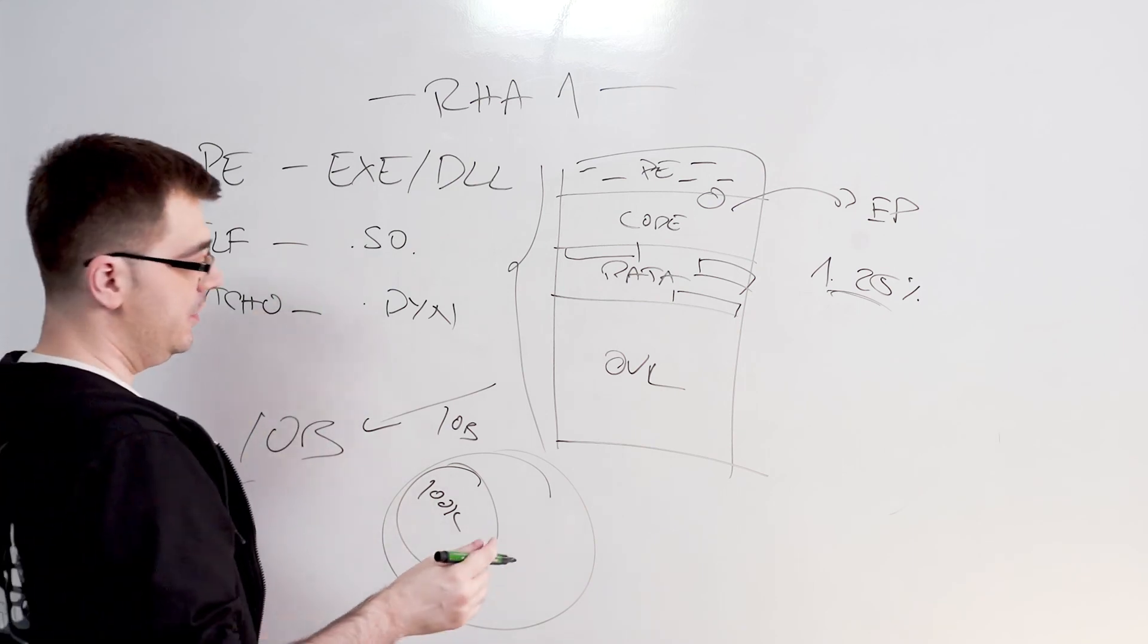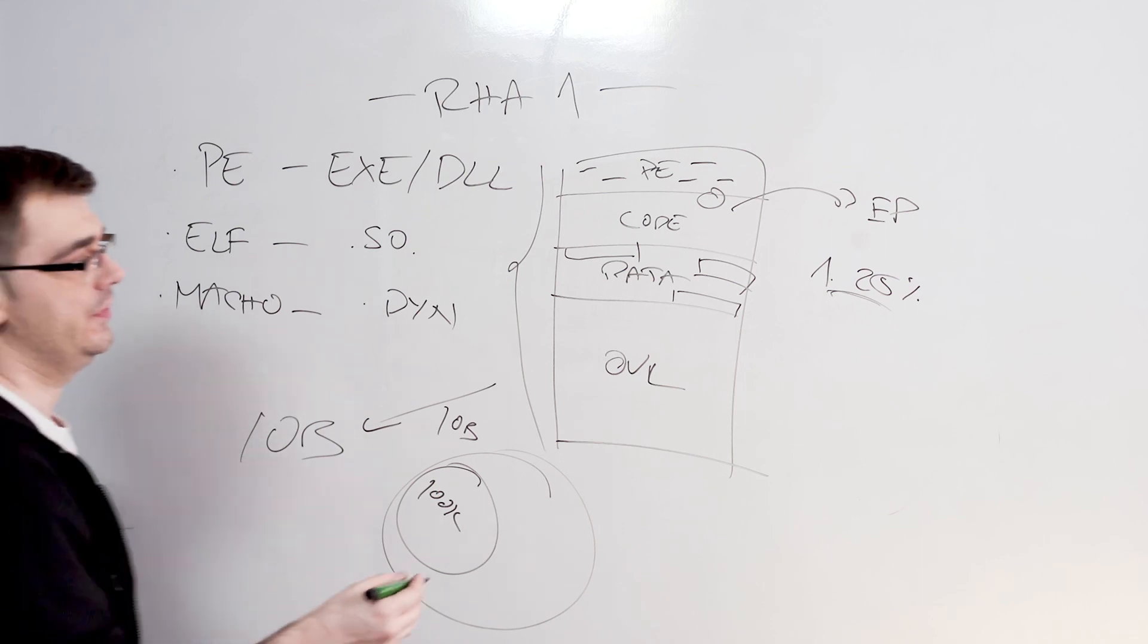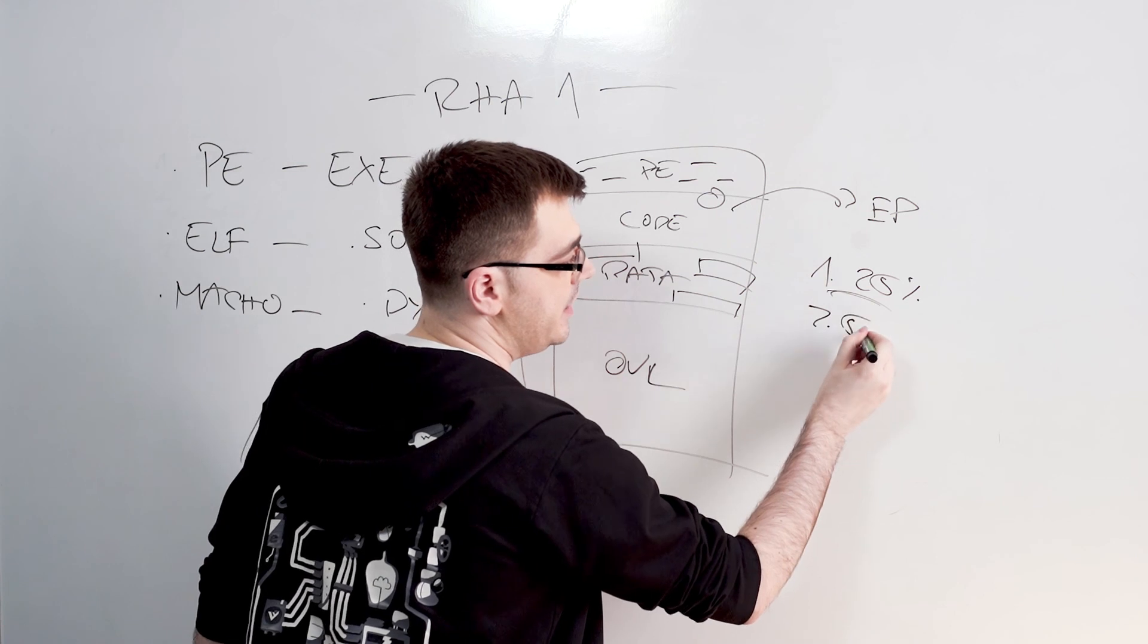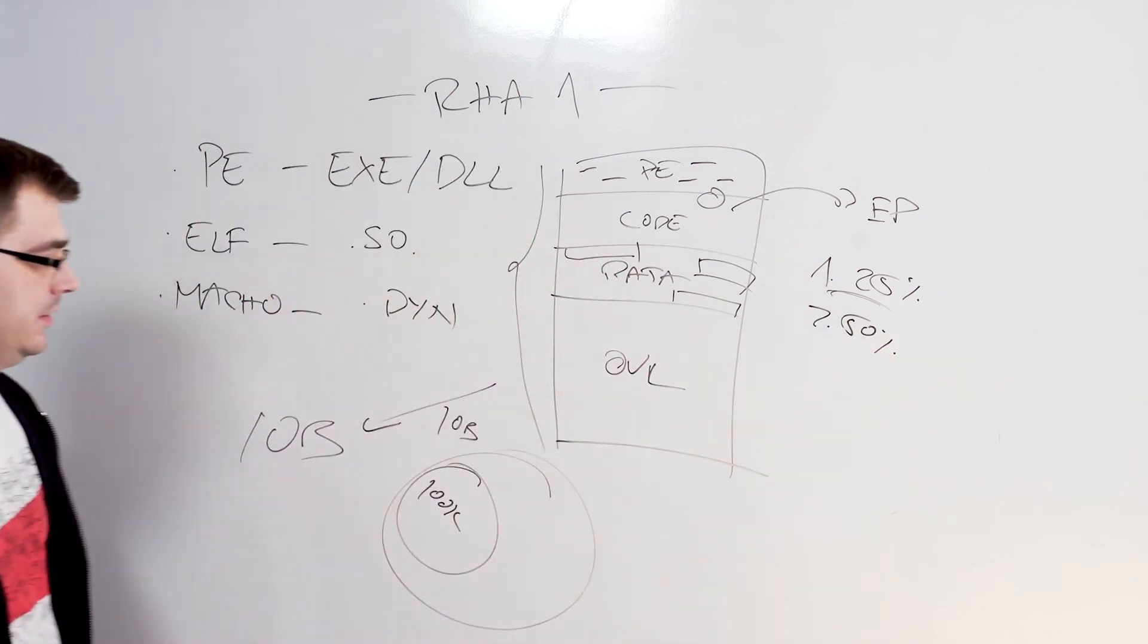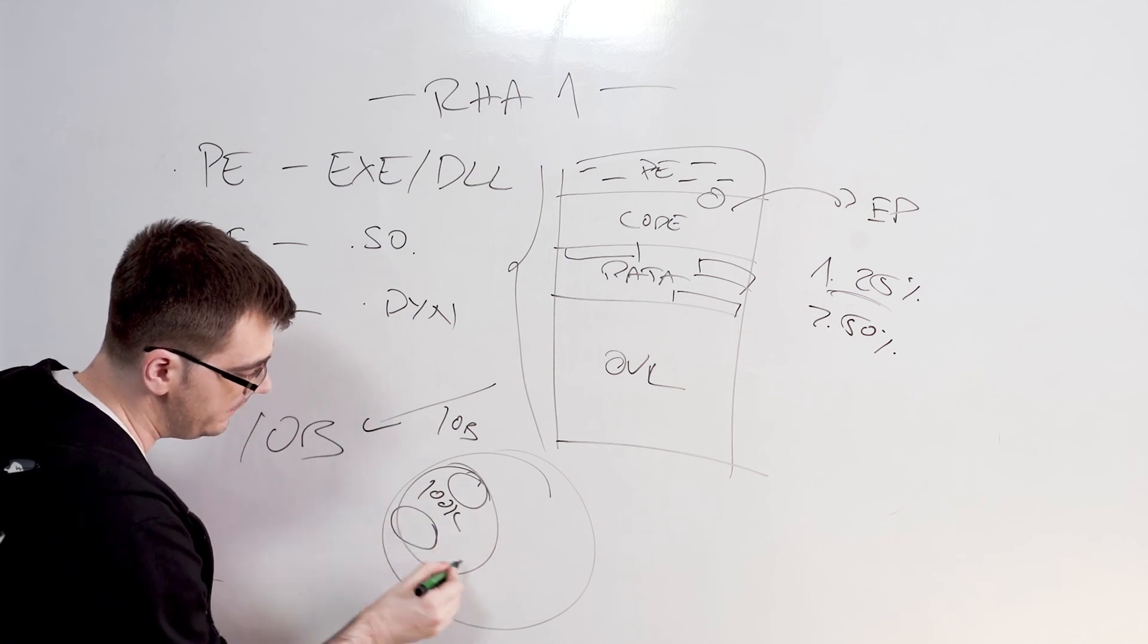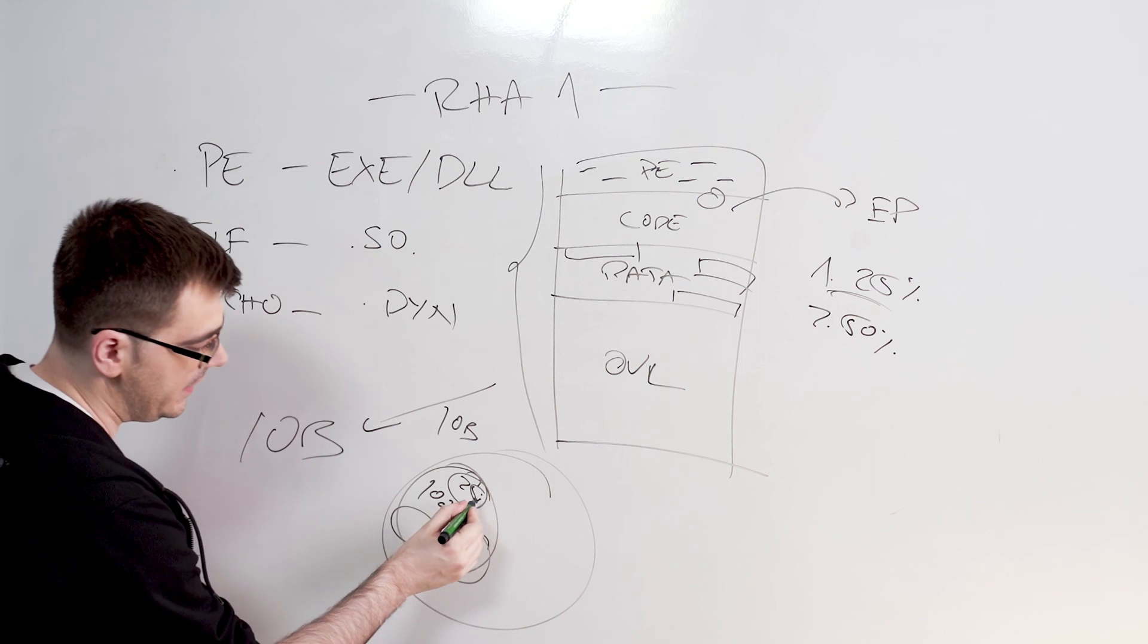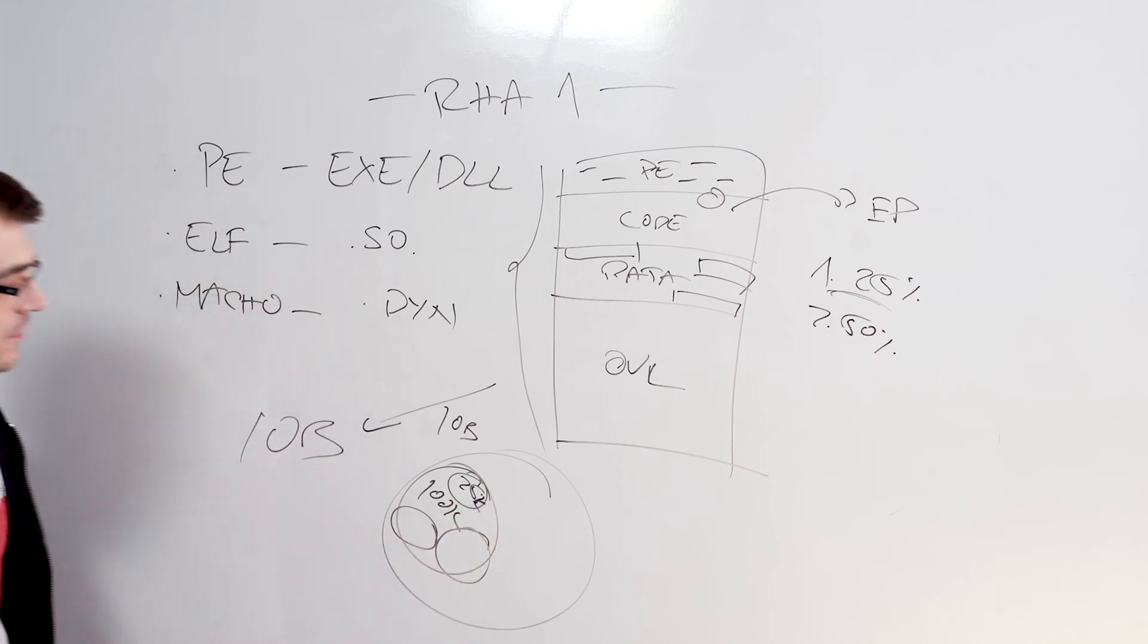And then you say, but that's not good enough. I want to find files which are even more similar to each other. And you go down a level and say, well, at 50% similarity, this 100,000 is then split up into a couple of different groups of let's say 25,000 samples, 25,000 samples, 25k.